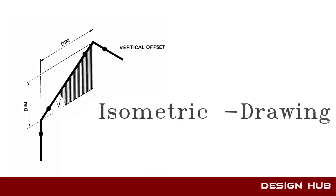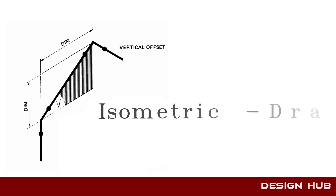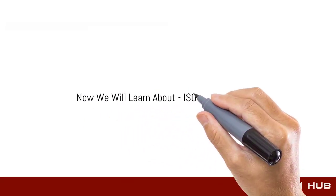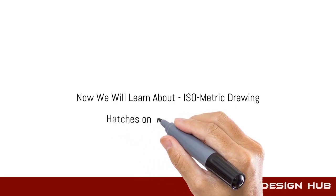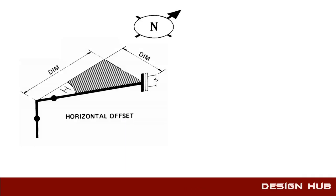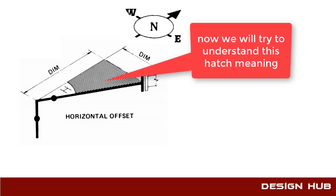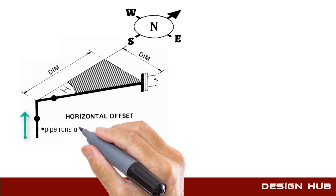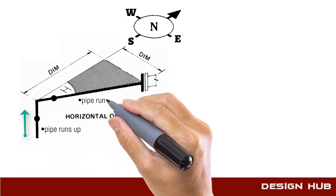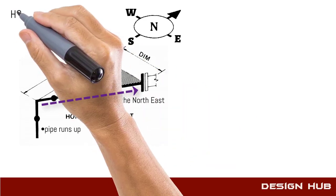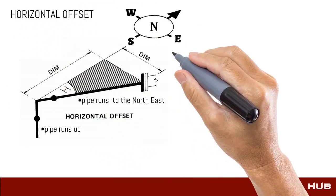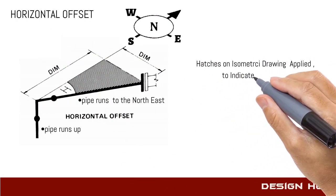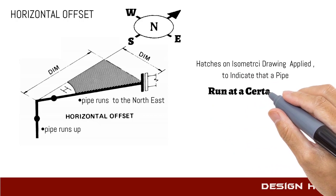Welcome to Design Hub. This video is related to pipe design. In this video we will learn isometric drawing reading and drafting in AutoCAD 2017. We will try to learn stepwise about isometric drawing. See this drawing — patches on isometric drawing are used to indicate the pipe direction and angle.